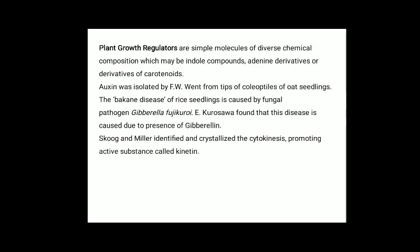Plant growth regulators are simple molecules of diverse chemical composition, which may be indole compounds, adenine derivatives, or derivatives of carotenoids. Auxin was first isolated by F.W. Went from the tips of coleoptiles of oat seedlings. The bakanae disease in rice seedlings was caused by fungal pathogen Gibberella fujikuroi, and it was found that this disease is caused due to the presence of gibberellin substances. Skoog and Miller identified and crystallized the cell-division promoting active substance called kinetin.